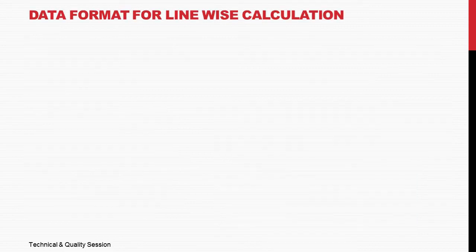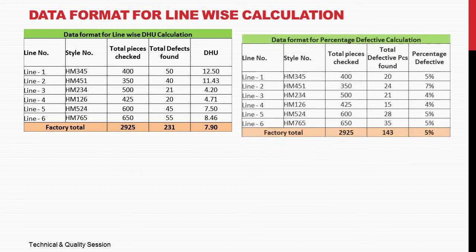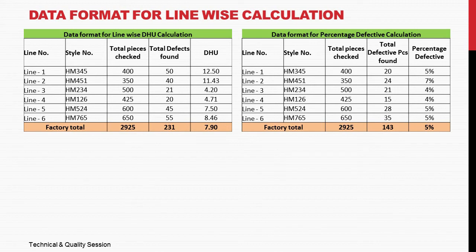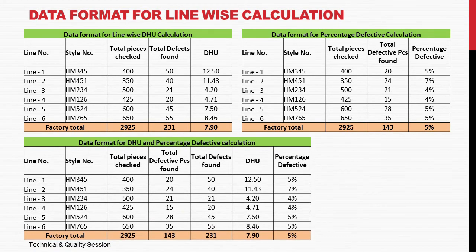Data format for line-wise calculation. Below is a data format for line-wise DHU calculation showing 6 lines' DHU and the factory total average. Below is a data format for line-wise percentage defective calculation showing 6 lines' percentage defective and the factory total average. You can also combine both into one format as shown. The total factory average DHU is 7.9 and total factory percentage defective is 5%.